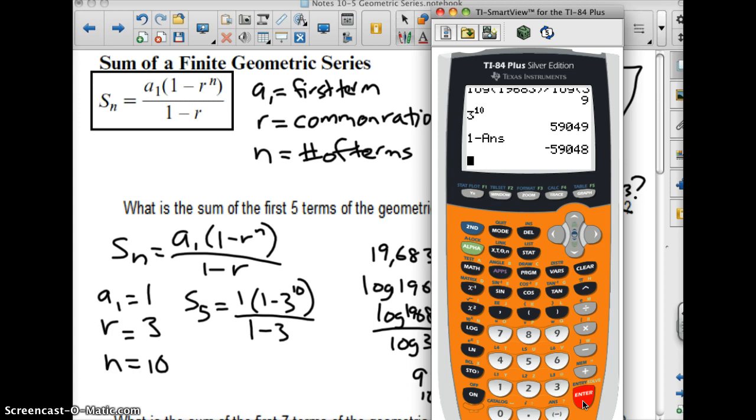So when I do 1 minus that, I get, when I multiply by 1, I get negative 59,048, and that's 1 times that, all over negative 2.